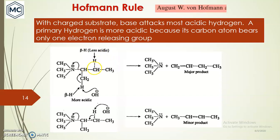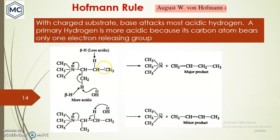When the leaving group is a bulky positively charged group — such as in quaternary ammonium hydroxide elimination — the less substituted product is the major product. In this example, there are two beta hydrogens; the one adjacent to the positive charge is more acidic. However, the other beta hydrogen is less acidic because the adjacent alkyl group donates electron density inductively (inductive effect), decreasing acidity. Therefore the less substituted product predominates — this is Hofmann's rule.